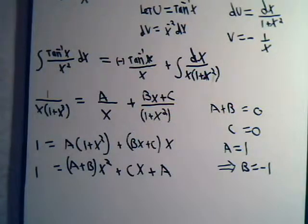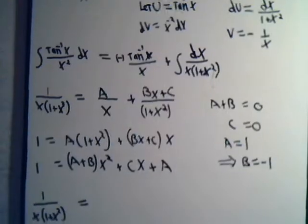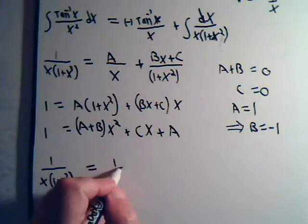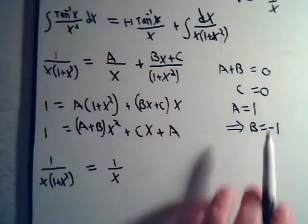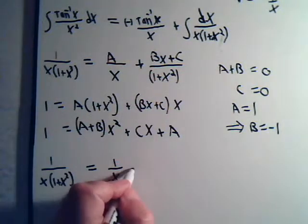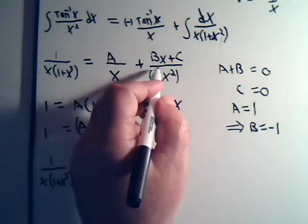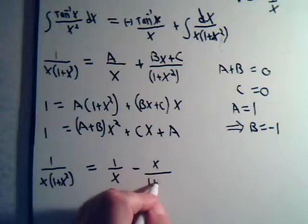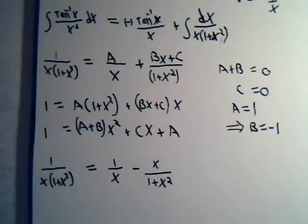Okay, that seemed to fall apart pretty fast for us then. So we have 1 over x times 1 plus x squared. That will equal a is 1. So that's 1 over x. c is 0. So we're going to have minus b is minus 1 minus x divided by 1 plus x squared.